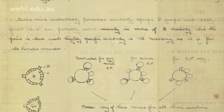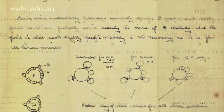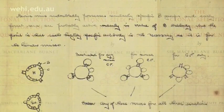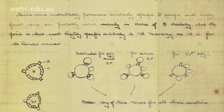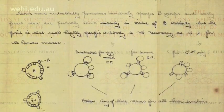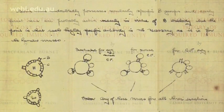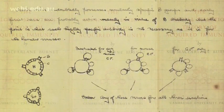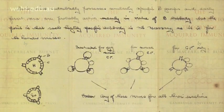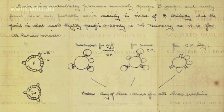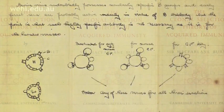Clonal selection is the central mechanism by which your body fights infection. The following visualisation presents clonal selection during an infection by strep throat bacteria.